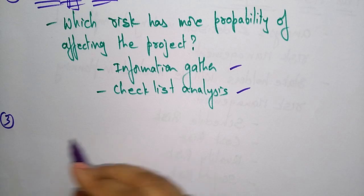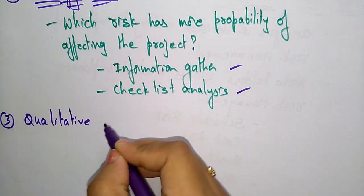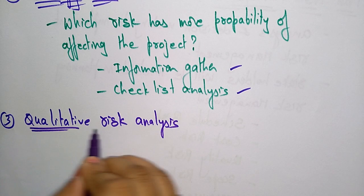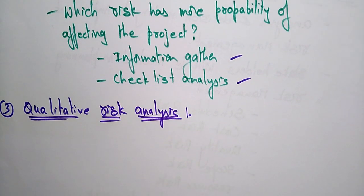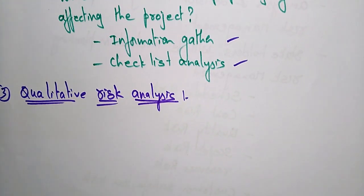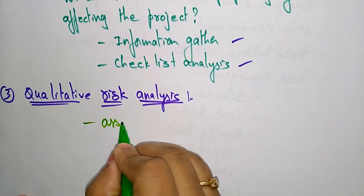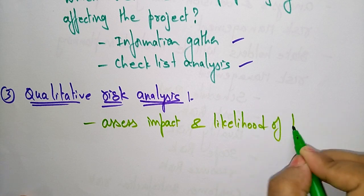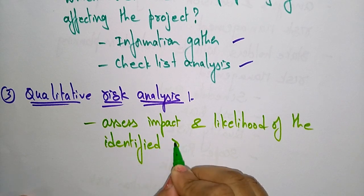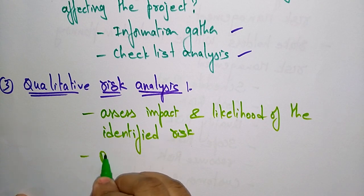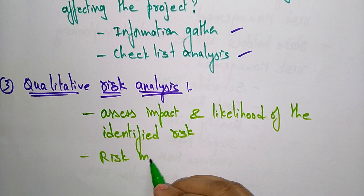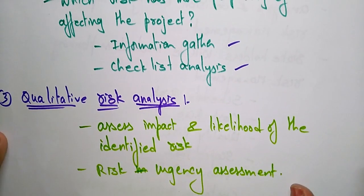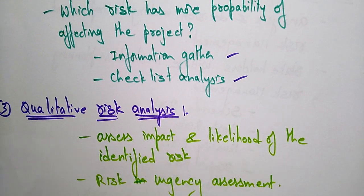The third process is Qualitative Risk Analysis. Qualitative means assessing quality — when developing a quality product, some risks may also be present. Qualitative risk analysis involves assessing the impact and likelihood of the identified risks, followed by a risk urgency assessment.